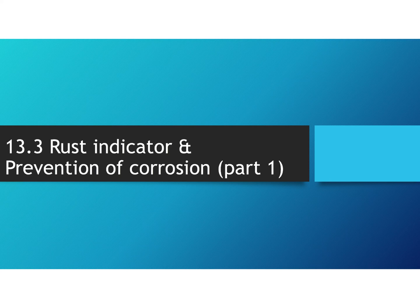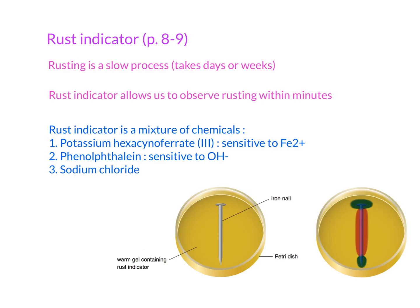In section 13.3, we're going to talk about what rust indicator is and how we're going to prevent corrosion. For rust indicator, you can refer to pages 8 to 9. As mentioned in the previous video, rusting is a very slow process — it may take days or even weeks to see the rust, which is hydrated iron(III) oxide. So how can we observe rusting in a faster manner? We can apply a rust indicator, which allows us to observe rusting within a few minutes.